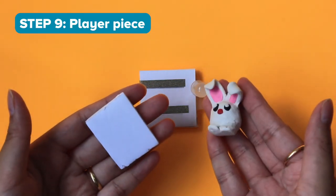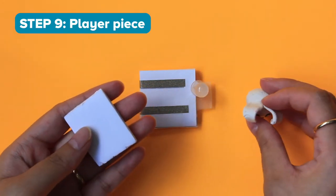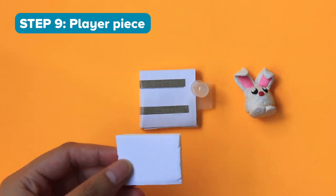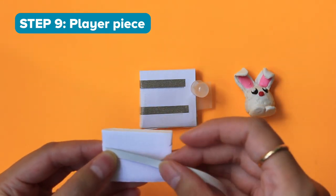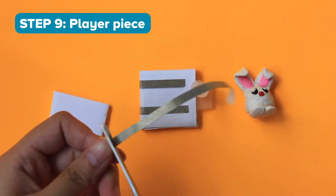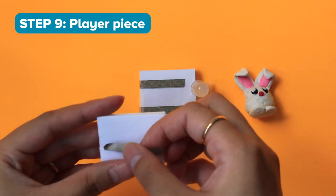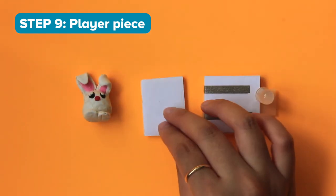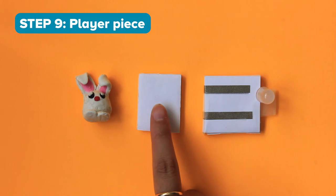Step 9. Get your player piece and cut out a base using the extra foam or if you have extra cardboard pieces that would work too. Stick a piece of conductive tape across the bottom of the base like this. Secure your player piece on top of the base using tape or glue.